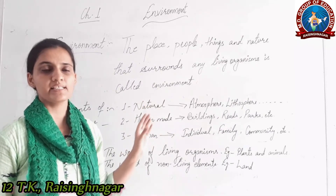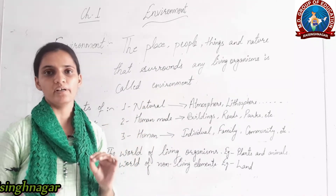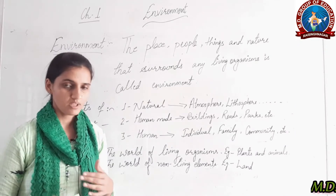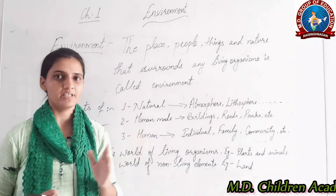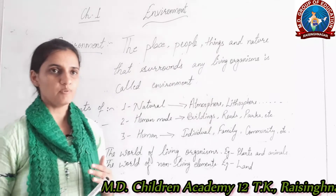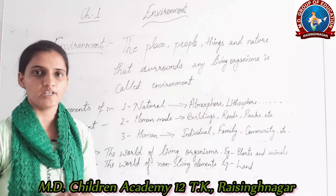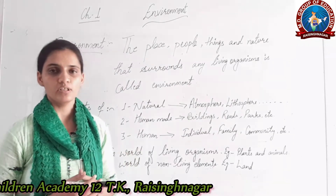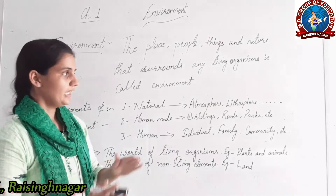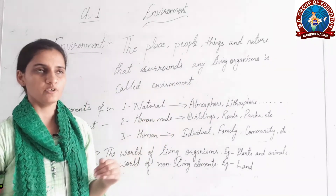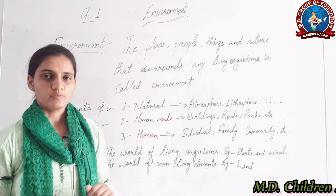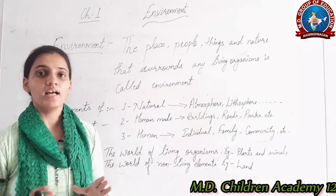So what does the word 'degrade' mean? Environment degradation refers to the worsening of the environment. For example, not conserving water — a natural resource — leads to its depletion. Conservation of natural resources means preserving them for use by coming generations. Another example of environment degradation is deforestation — the large-scale cutting of forest trees.